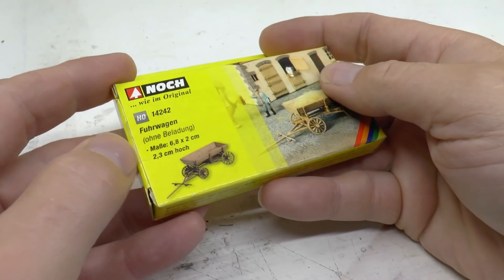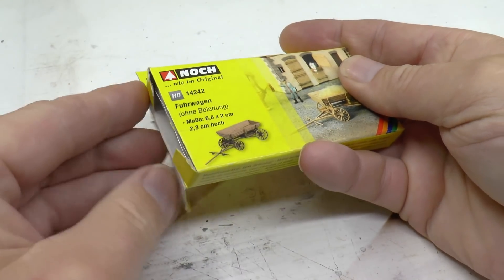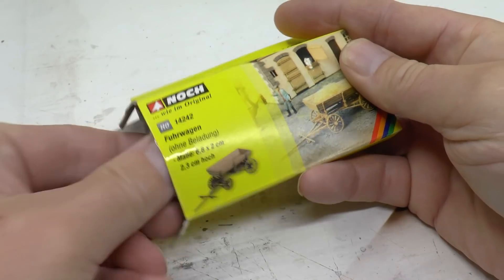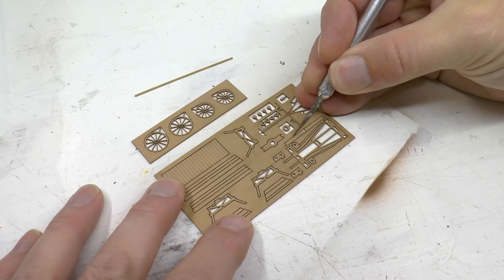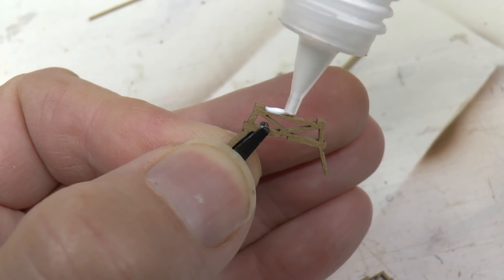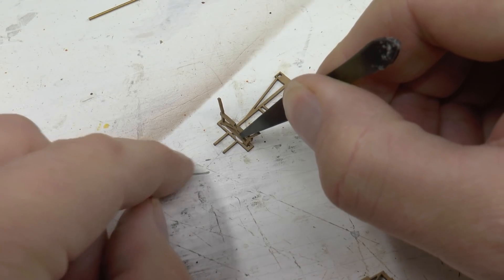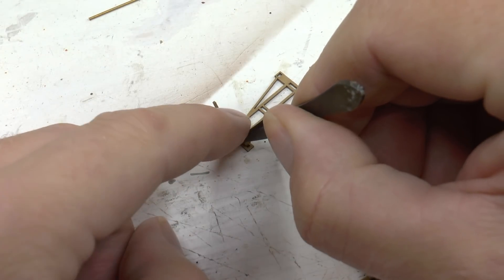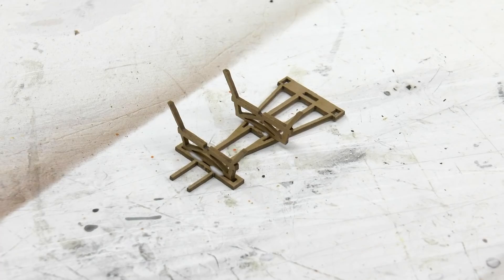Now to that horse drawn trolley or wagon. I found this kit item number 14242 from NOCH and it's just exactly what I'm looking for for this scene. So why not take a shortcut and just assemble this.